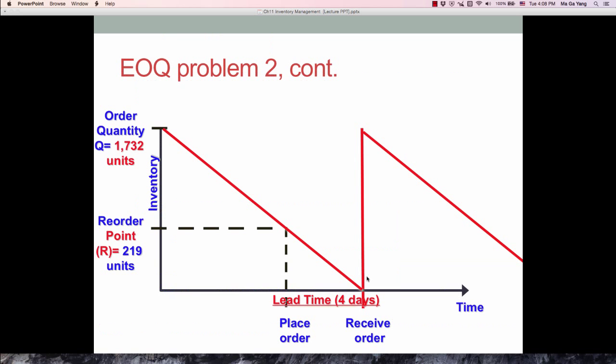When you draw this into the graph, so our reorder point - I mean economic order quantity, we order our EOQ. So we have now 1,732 units. Then we use up our inventory. When inventory reaches the reorder point, which is 219 units, then we place order.